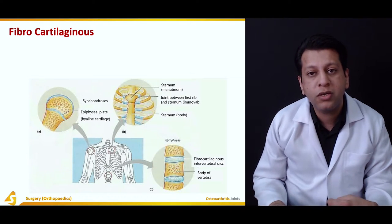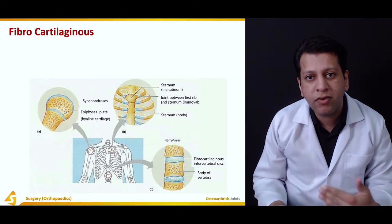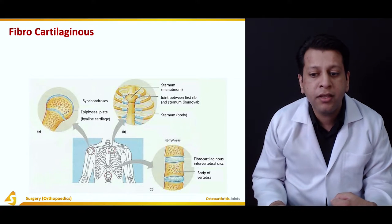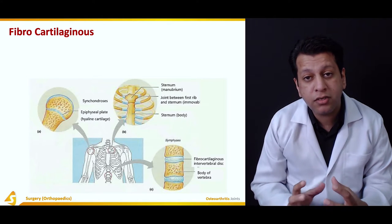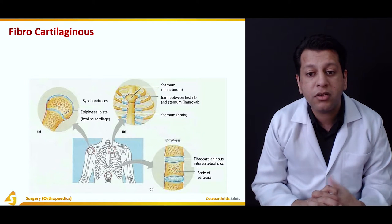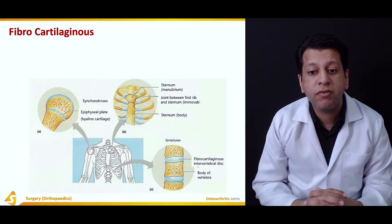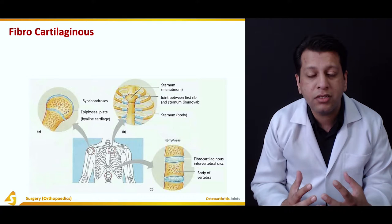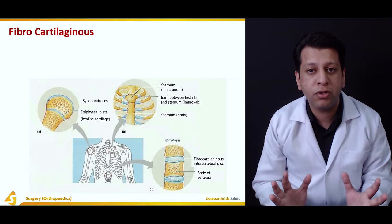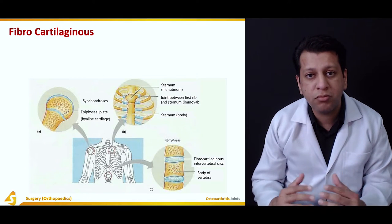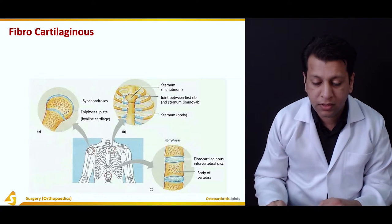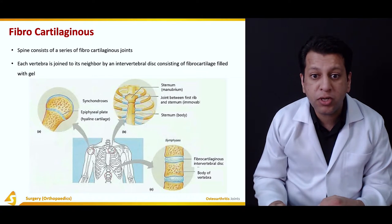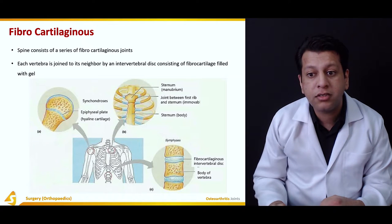Fibrocartilaginous joints allow free movement in one plane and very little in another. A classical example is the spine — the fibrocartilaginous intervertebral disc allows extensive flexion and extension but very little rotary movement. Another example is the joints between the ribs and sternum: during inhalation, the ribs move upward and outward, and during expiration they move inward and downward. Some degree of movement is allowed but they cannot rotate around their axis. The spine consists of a series of fibrocartilaginous joints, each vertebra joined to its neighbor by an intervertebral disc of fibrocartilage.